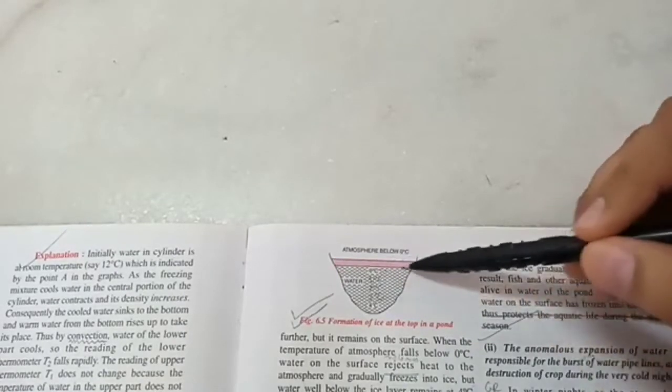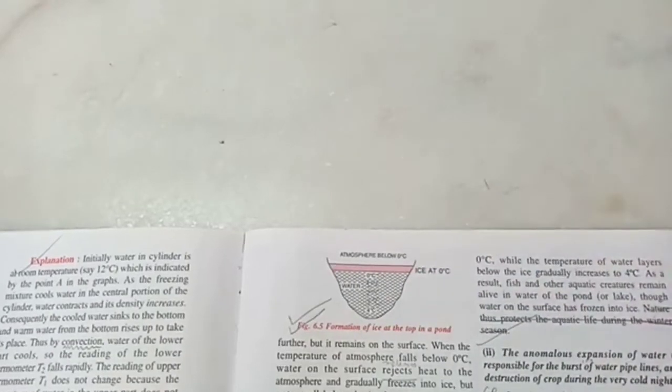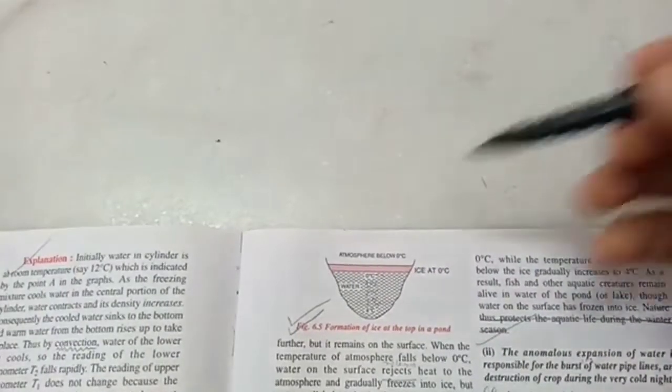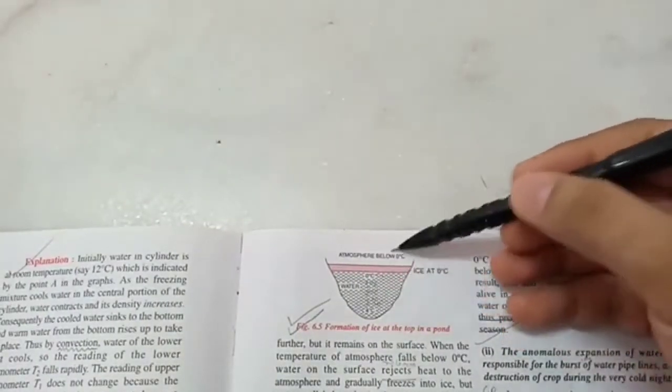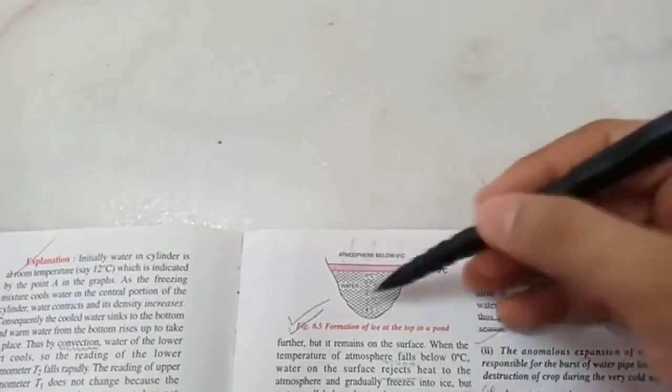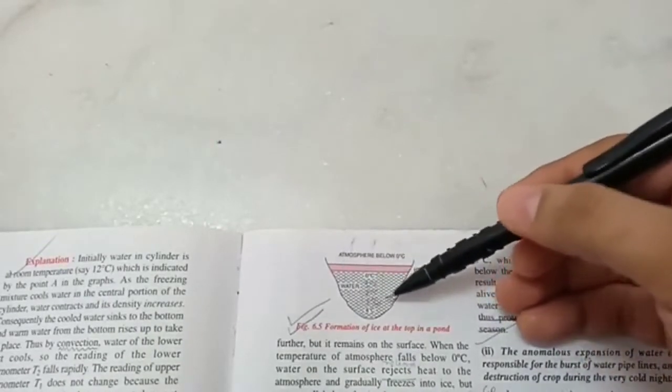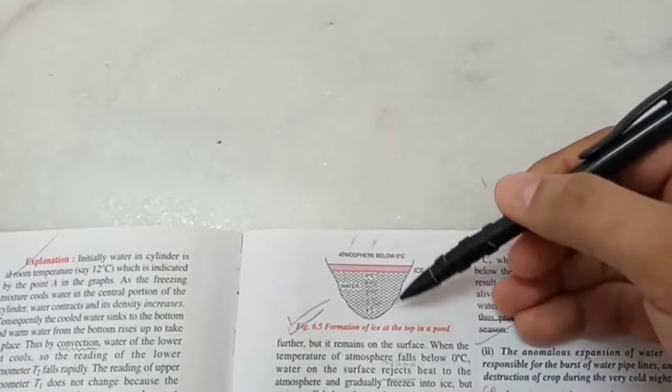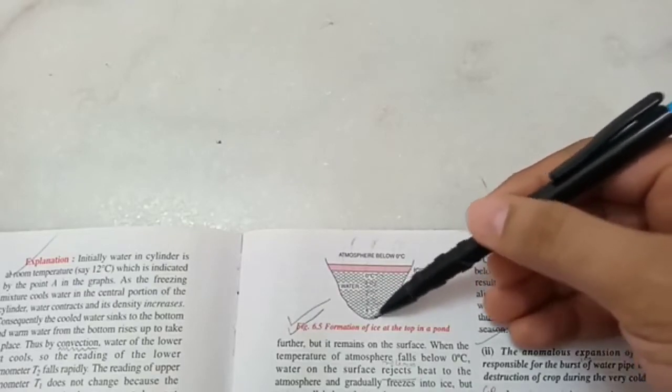And thankfully the layer of ice on top of it is a poor conductor of heat. That means it will prevent the heat energy inside from escaping out. Otherwise the whole lake would have frozen and all the aquatic plants and animals would have died. But they survive because they are adapted to live in 4 degree Celsius water comfortably.